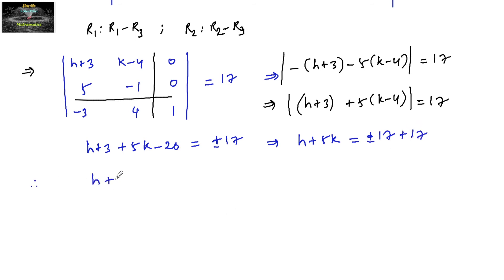So therefore, we had two lines. H plus 5K is equal to minus 17, plus 17. So which implies H plus 5K is equal to 34 or minus 34 is equal to 0. Or we can write H plus 5K is equal to 0.